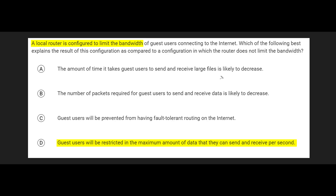Option A is close but actually the opposite — it states the time to receive a large file would decrease, but it would actually increase. Option B is a trick: it says the number of packets required would decrease, but bandwidth doesn't affect the number of packets — the same amount of data is sent, it just takes longer. Option C mentions fault tolerance, but lowering bandwidth does not make things less fault tolerant — that's a completely separate concept. Bandwidth is about the speed or rate of transfer, not whether you can transfer at all.